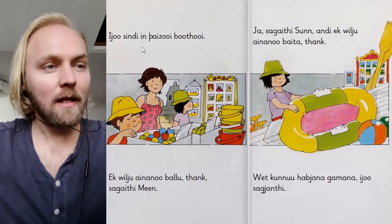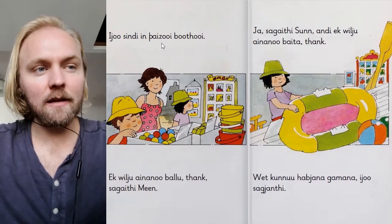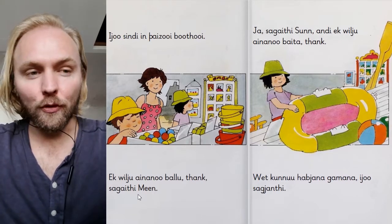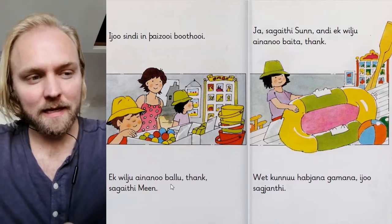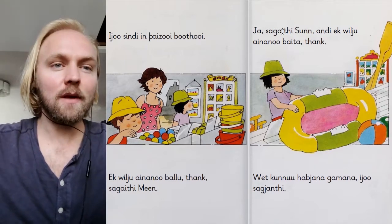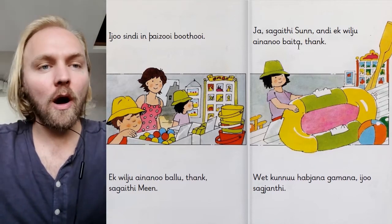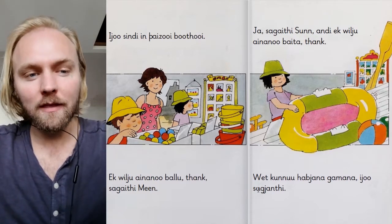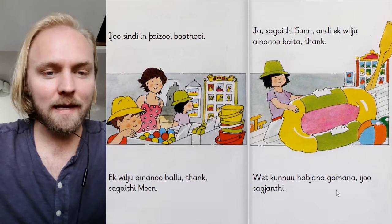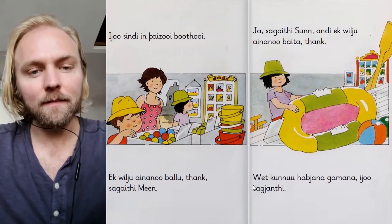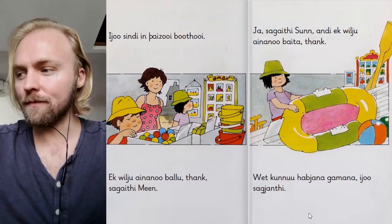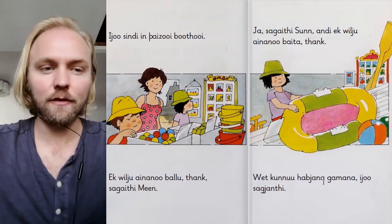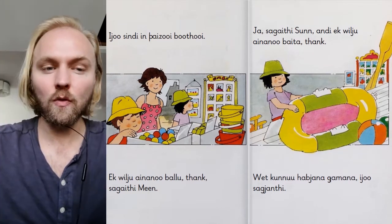They are in the booth. 'I want a ball, thanks,' says moon. 'Yes,' says sun. 'And I want a boat, thanks. We can have fun,' they say. 'We too can have fun' — 'wet' is 'we two.'